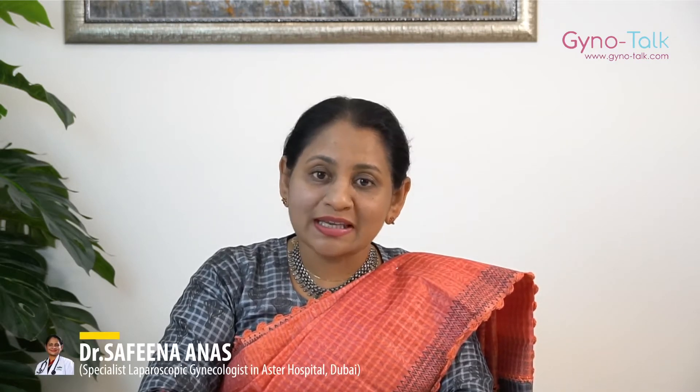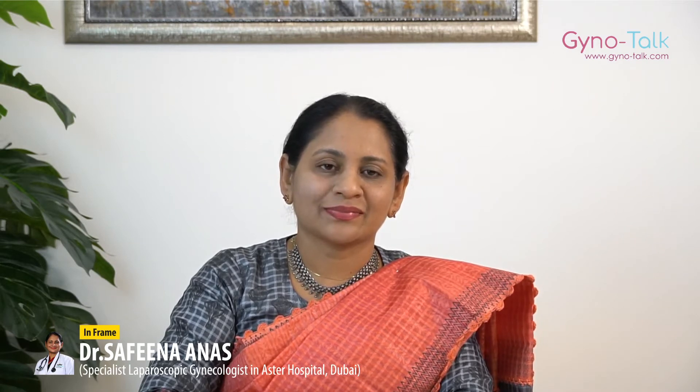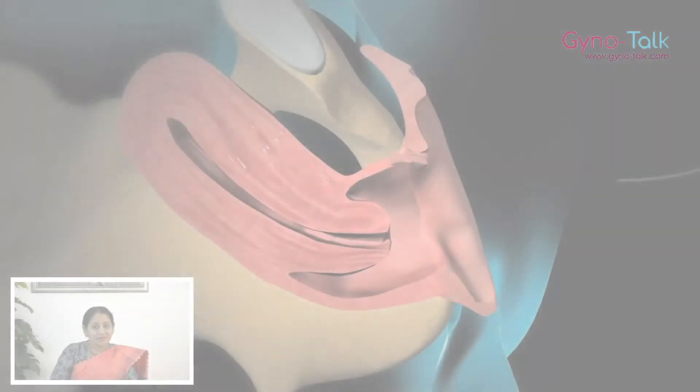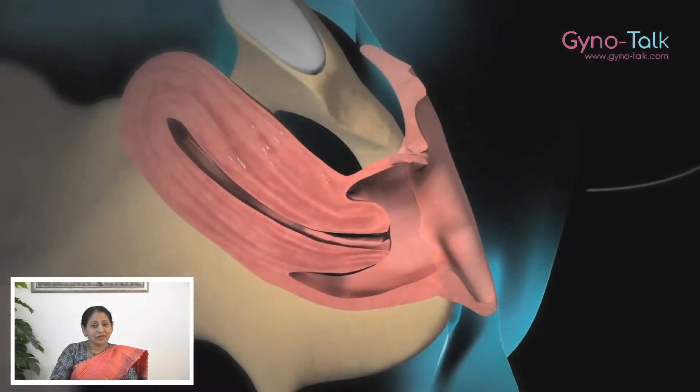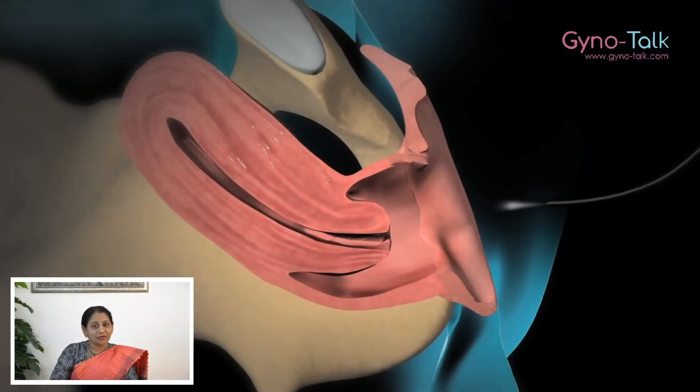Hysteroscopy is a procedure which uses a thin tube-like telescope called a hysteroscope to see inside of the uterus. It can also be used to do some surgeries inside the uterine cavity.